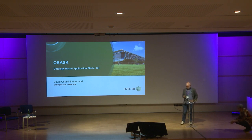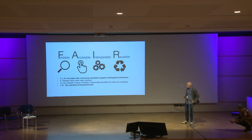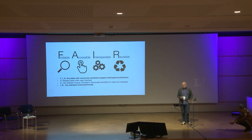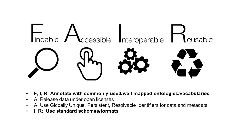It starts from the FAIR definition, which everyone has heard many times in talks. Part of making things findable, accessible, interoperable, and reusable is to annotate with commonly used or well-mapped ontologies and vocabularies, and to use standard schemas and formats. So say you've been a great citizen of the biocuration world, and you've got that far.